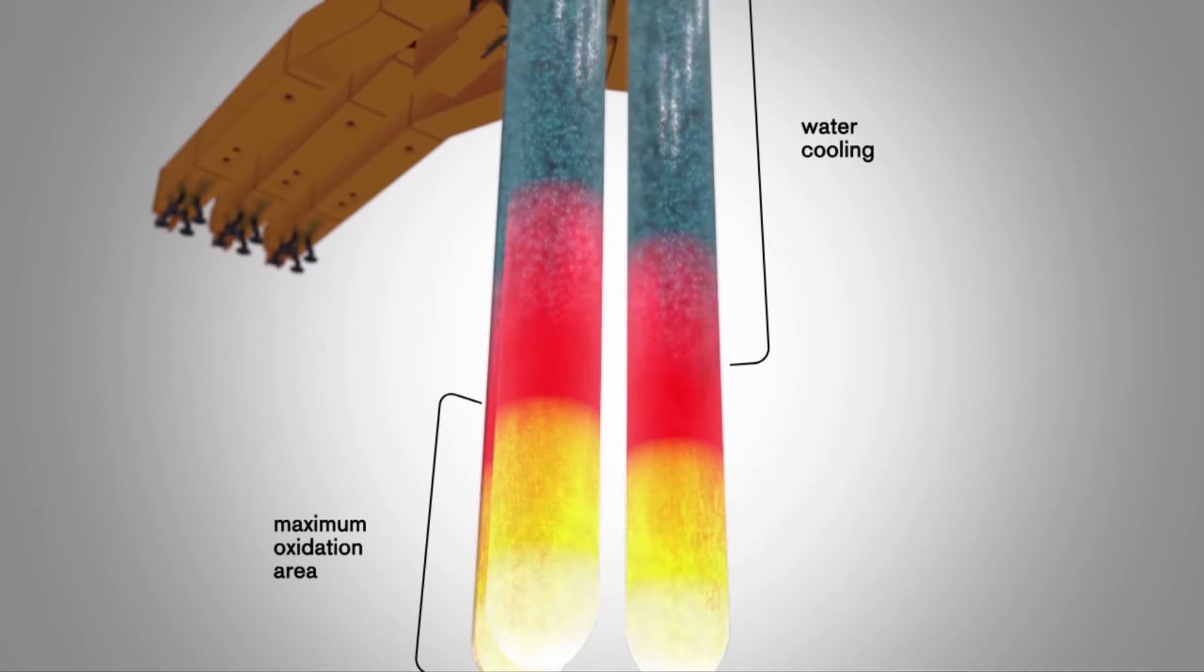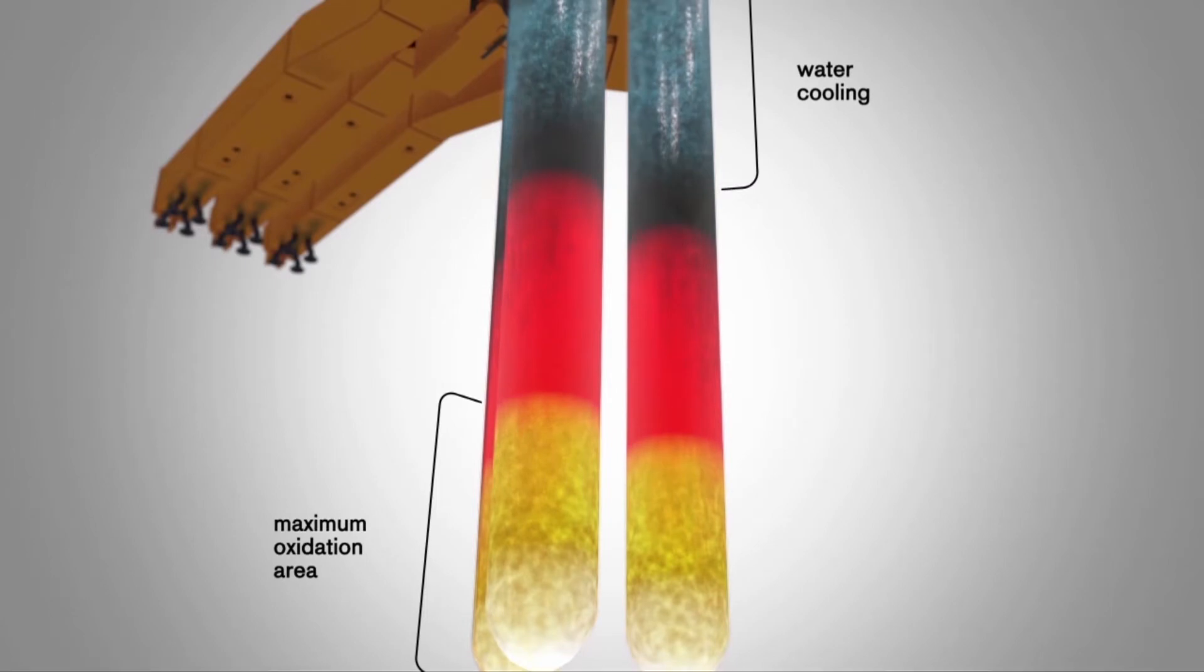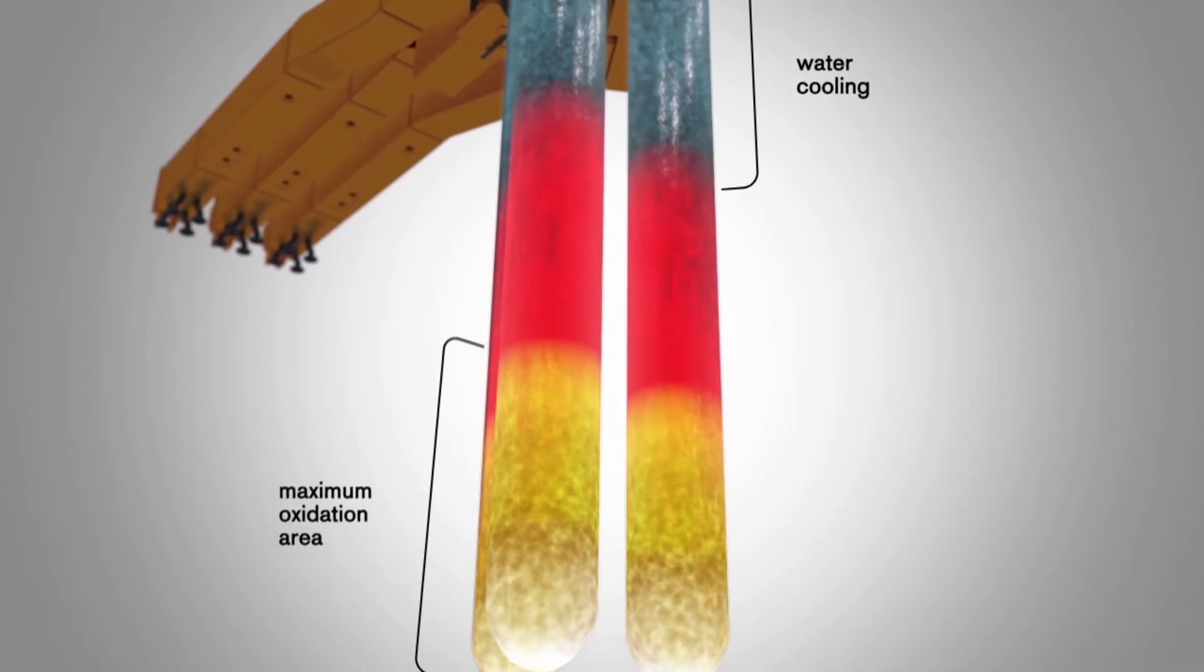At a temperature higher than 700 degrees Celsius, graphite oxidizes at a high reaction speed. Effective water cooling hinders this phenomenon.